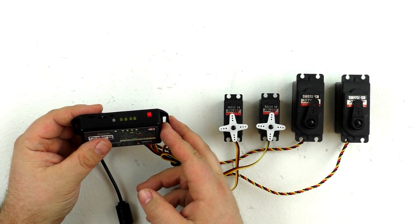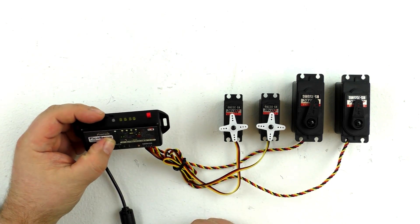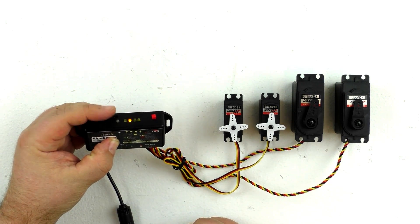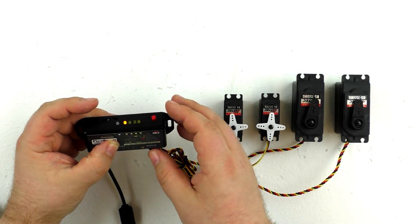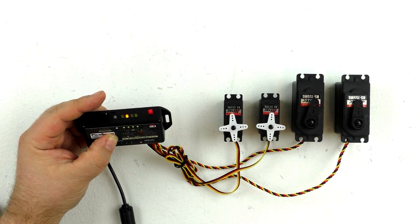When we're in the servo settings menu, while the light is blinking once, we can use the wheel to select between our four different servos. We're going to select servo one, and that's the servo we're going to edit. We're going to tap the record button.